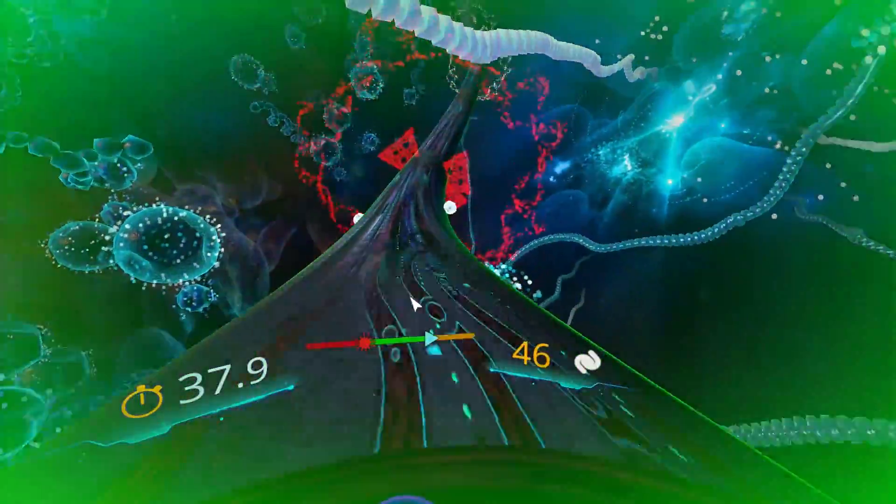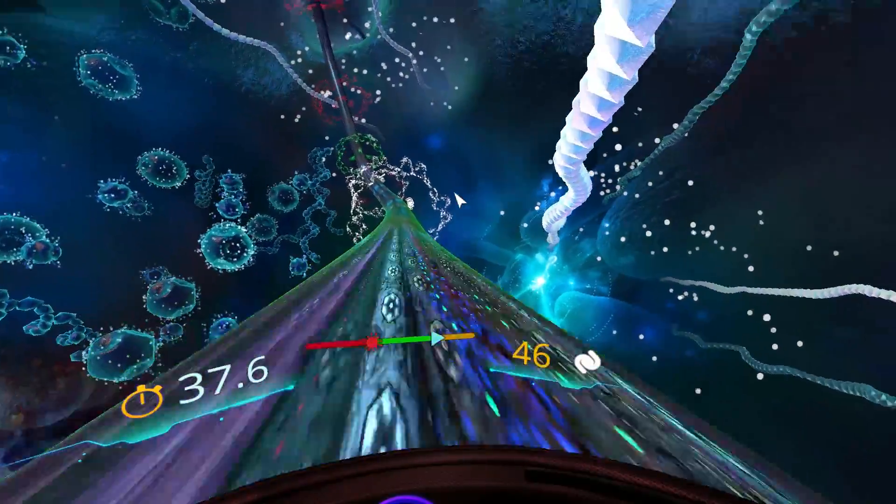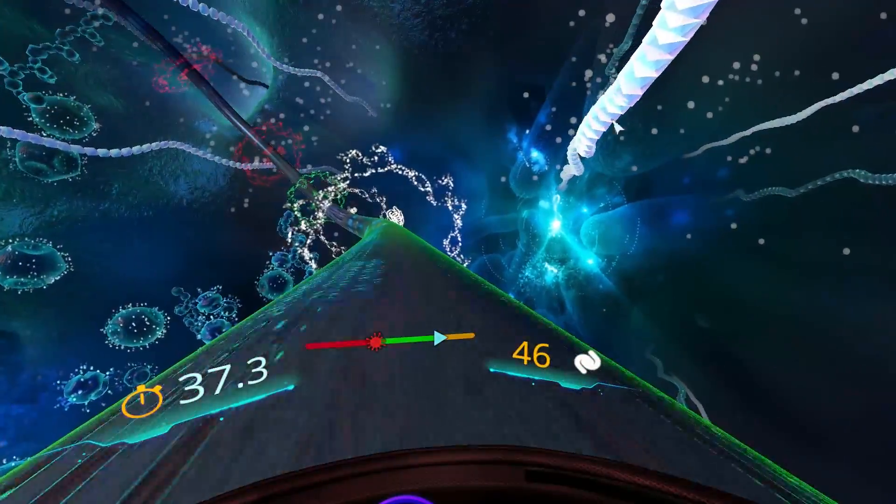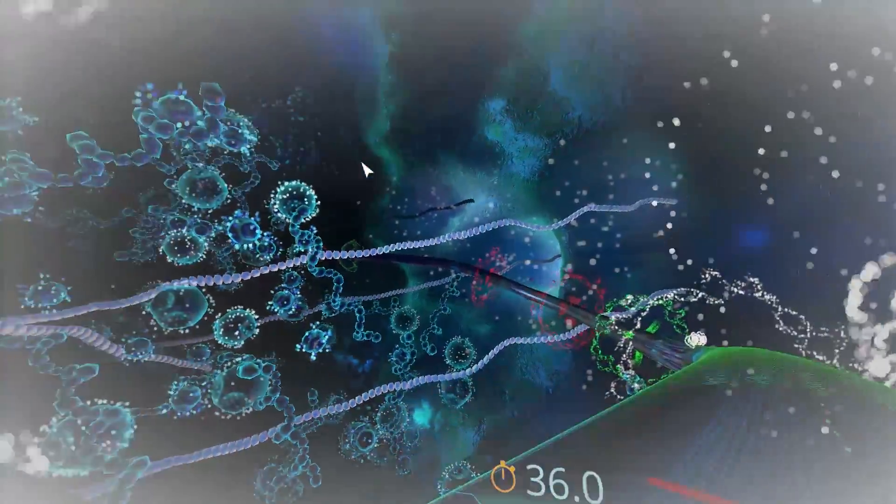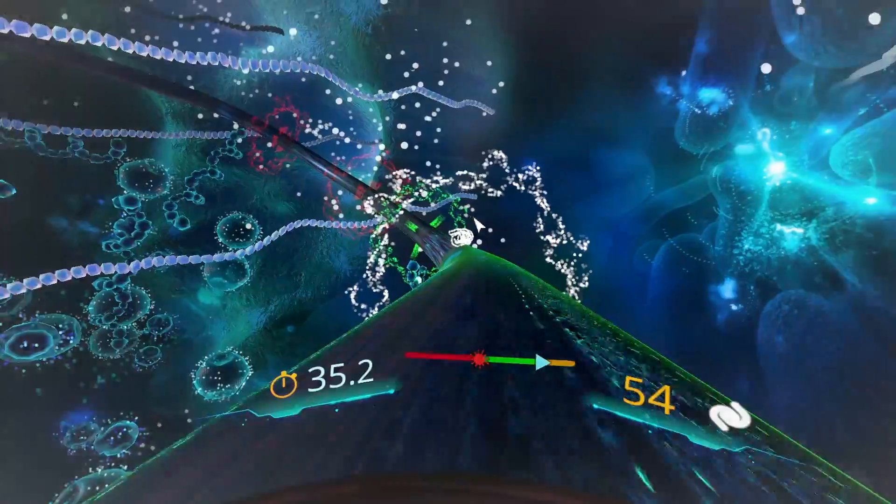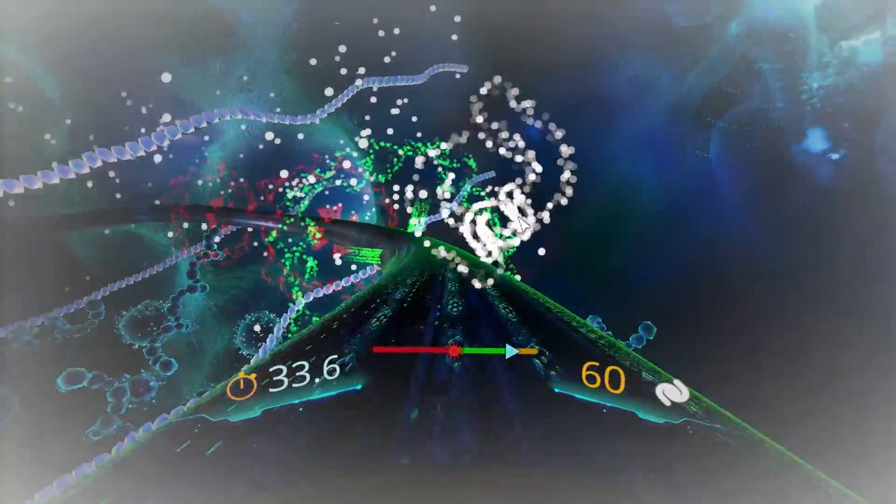Like for example here you can kind of see that we're moving across the microtubules. We have these other microtubules over there. We're going to be approaching one of the organelles which is somewhere in the distance. I think it's a lysosome and then it actually tells you what the lysosomes do.